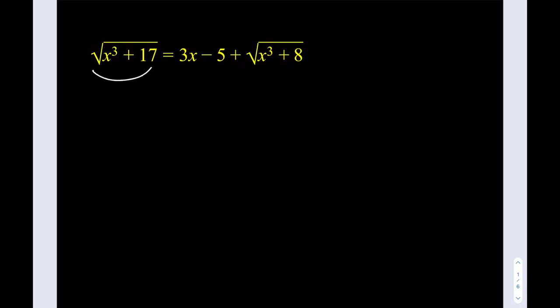That's going to give us, so I'm going to square this expression here. It's going to give me x cubed plus 17. And on the right hand side, I can treat it as a sum of two things. I can square the first one, and then I can square the second one, right? But I also need to write down the 2ab. Let's not forget that.